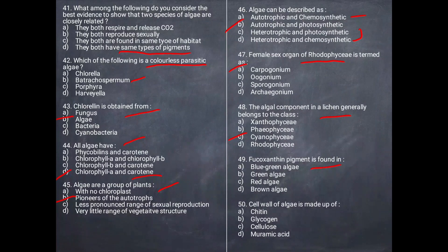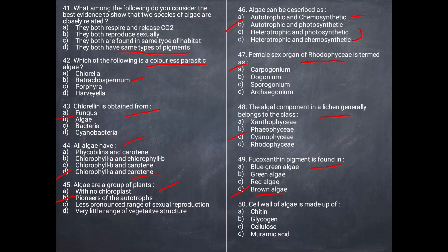Next question: Fucoxanthin pigment is found in which algae? The Fucoxanthin pigment is found in Phaeophyceae — we call it brown algae. The correct answer is D, brown algae.